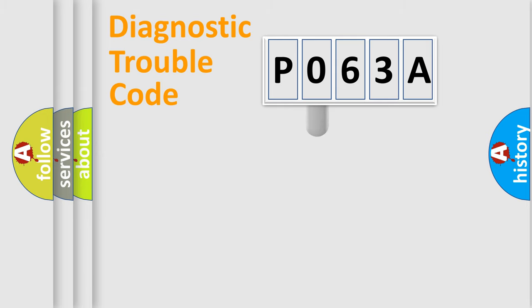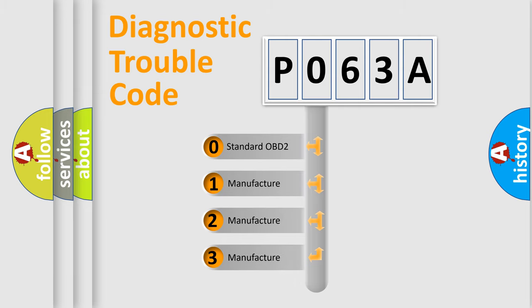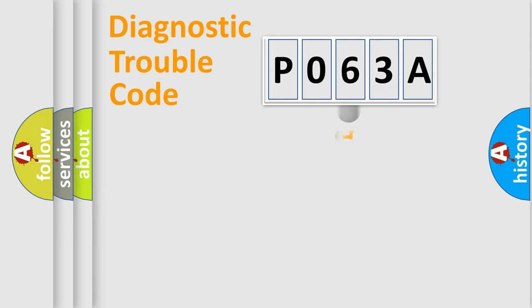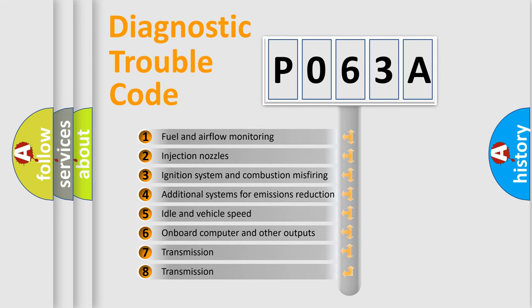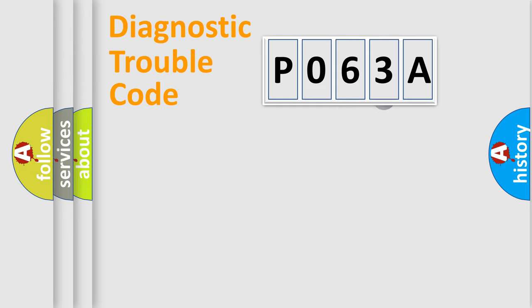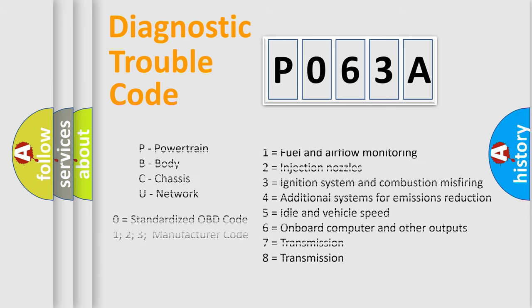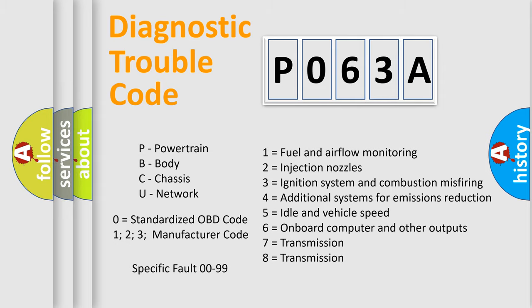This distribution is defined in the first character of the code. If the second character is expressed as zero, it is a standardized error. In the case of numbers 1, 2, or 3, it is a manufacturer-specific error expression. The third character specifies a subset of errors, and this distribution is valid only for the standardized DTC code. Only the last two characters define the specific fault of the group. Such a division is valid only if the second character code is expressed by the number zero.